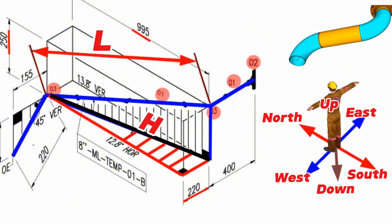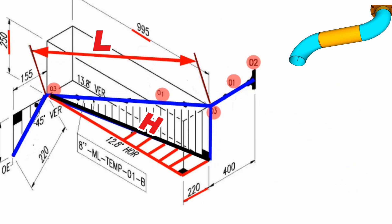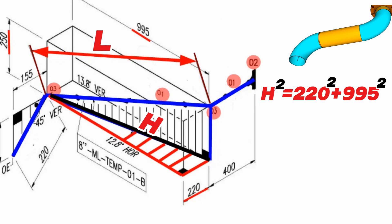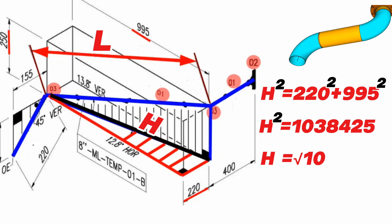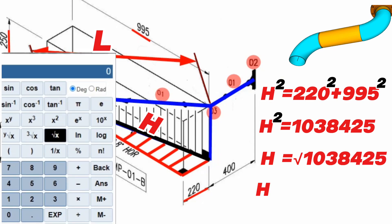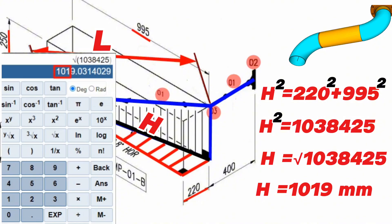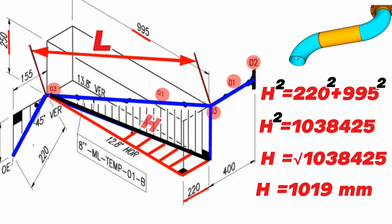First, let's find the hypotenuse of the horizontal right triangle using the Pythagorean theorem. H squared equals 220 squared plus 995 squared. The square of the hypotenuse equals 1,038,425. Therefore H equals the square root of 1,038,425. Using a scientific calculator, we find that H equals 1019 millimeters. This is the length of the hypotenuse of the horizontal right triangle, and also one of the perpendicular sides of the vertical right triangle.